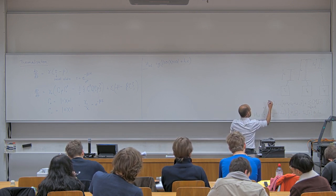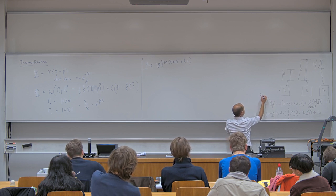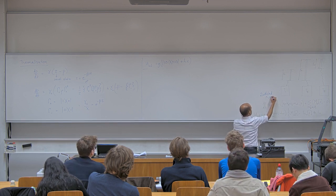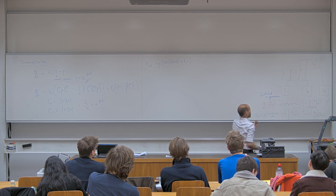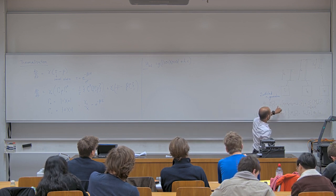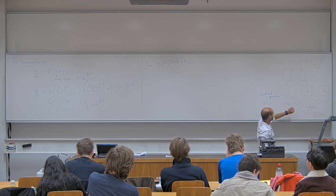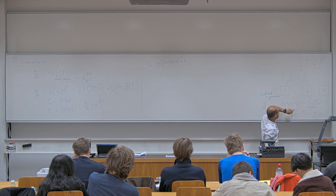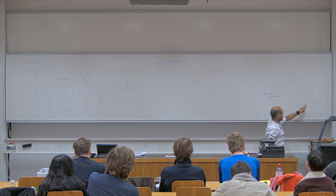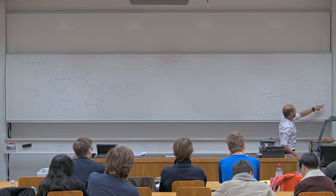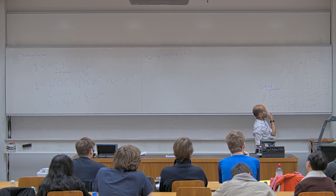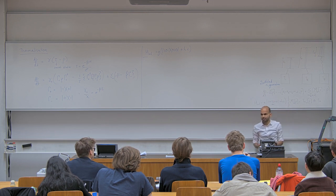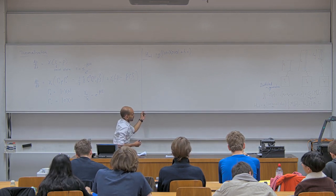We wrote down a master equation for how the system evolves, adding up all the terms. The rate of change of the system is some Lindbladian acting on the system. In the Lindbladian, first you have the usual unitary evolution due to the Hamiltonians — H_cold, H_room, H_hot, and H_int — and then you have all of the dissipators, each in reset form, replacing that particular subsystem's state with its thermal state.